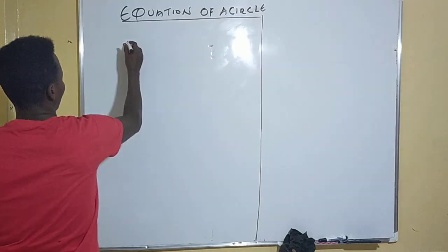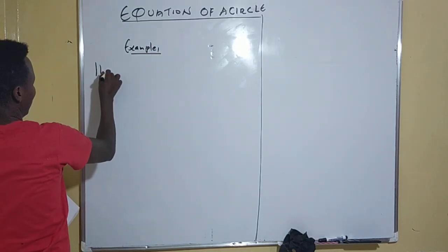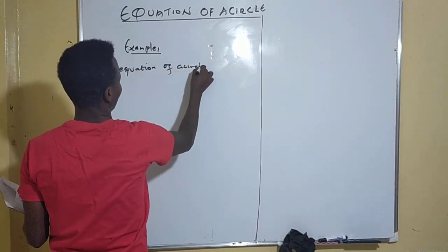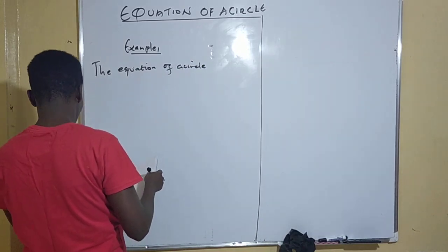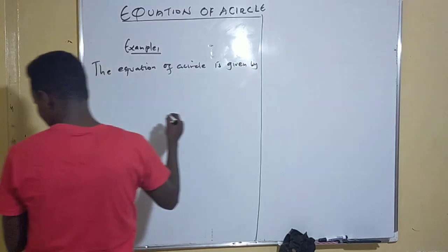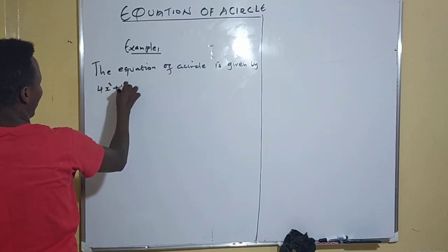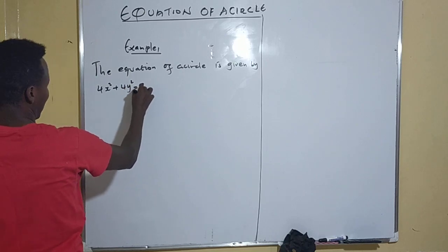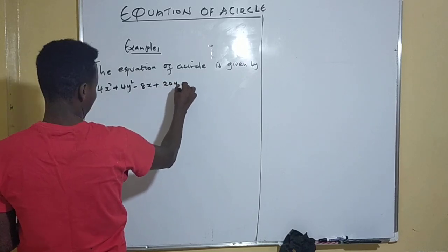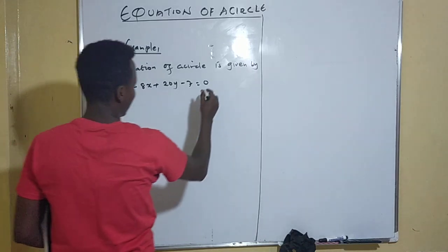This is example one. You are told the equation of a circle is given by 4x² + 4y² - 8x + 3y - 7 = 0. You are told to determine the coordinates of the center of the circle.